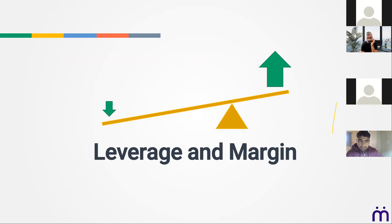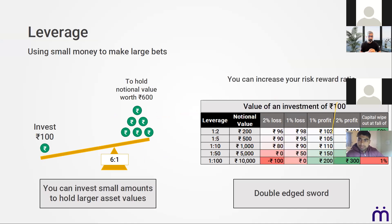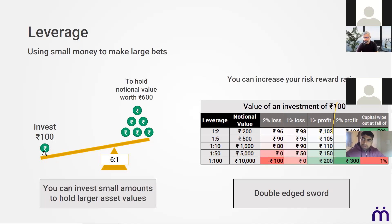Leverage in financial markets works the same as physical leverage. Suppose you want to move a large block — you use a lever and fulcrum, so even a small force gets multiplied. Similarly, if you have 100 rupees to invest, you can take leverage at a ratio of say 6:1, so your capital of 100 becomes 600 when actually investing in the market.